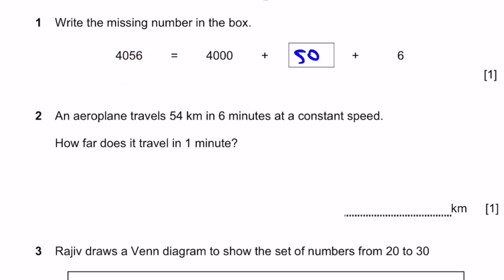Question 2. An aeroplane travels 54 kilometers in 6 minutes at a constant speed. How far does it travel in 1 minute? That's simply 54 divided by 6, which equals 9 kilometers.